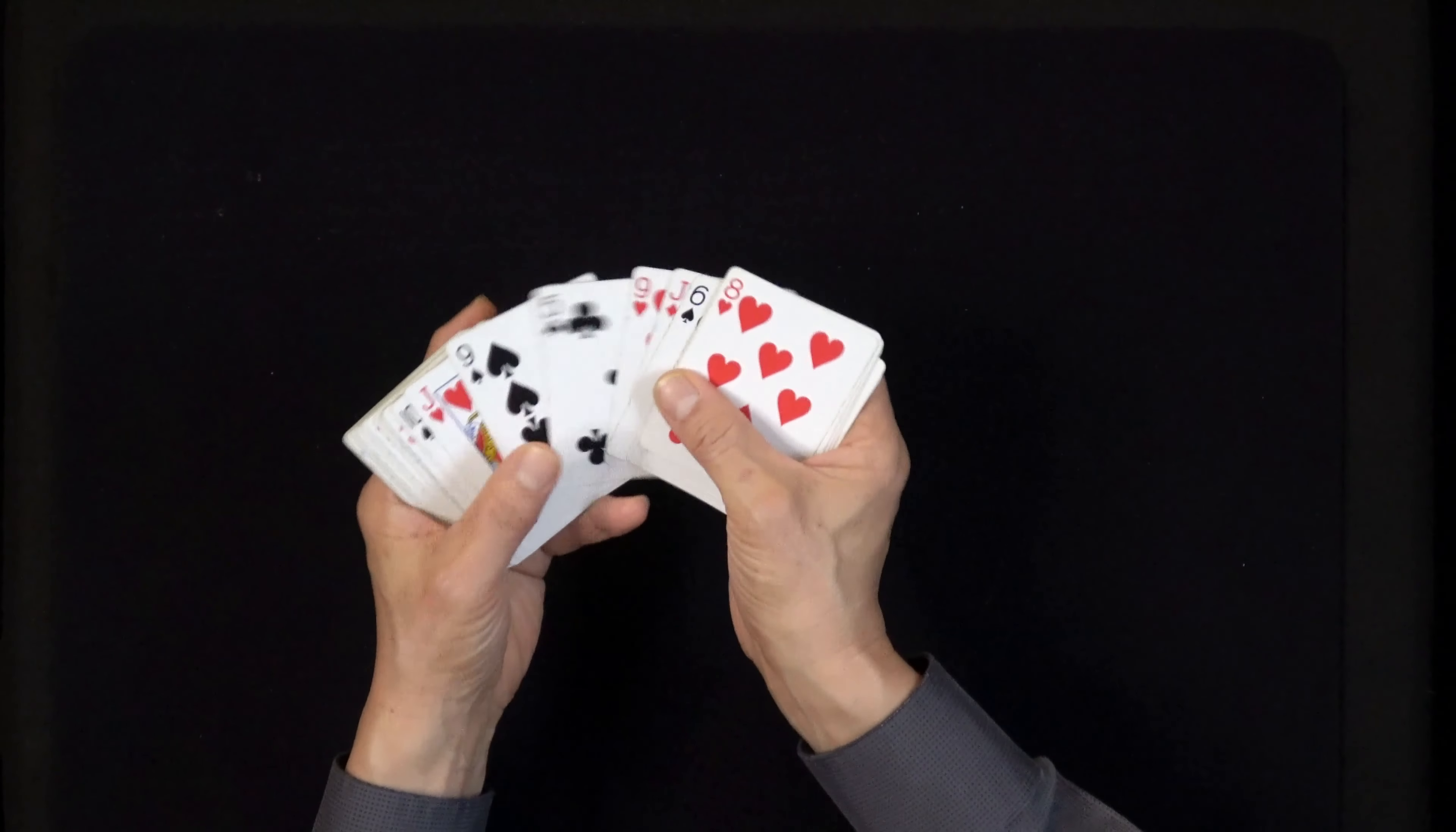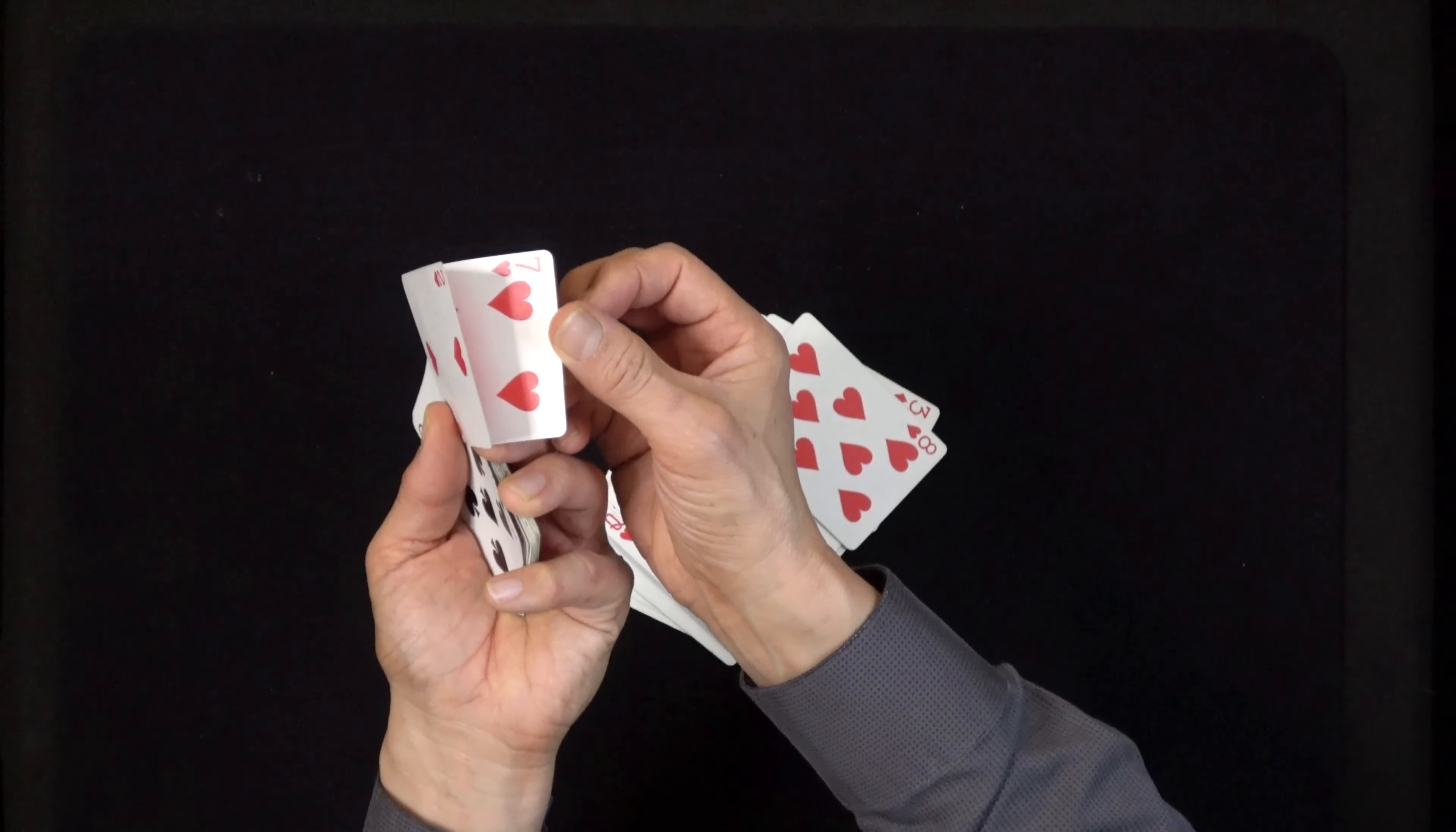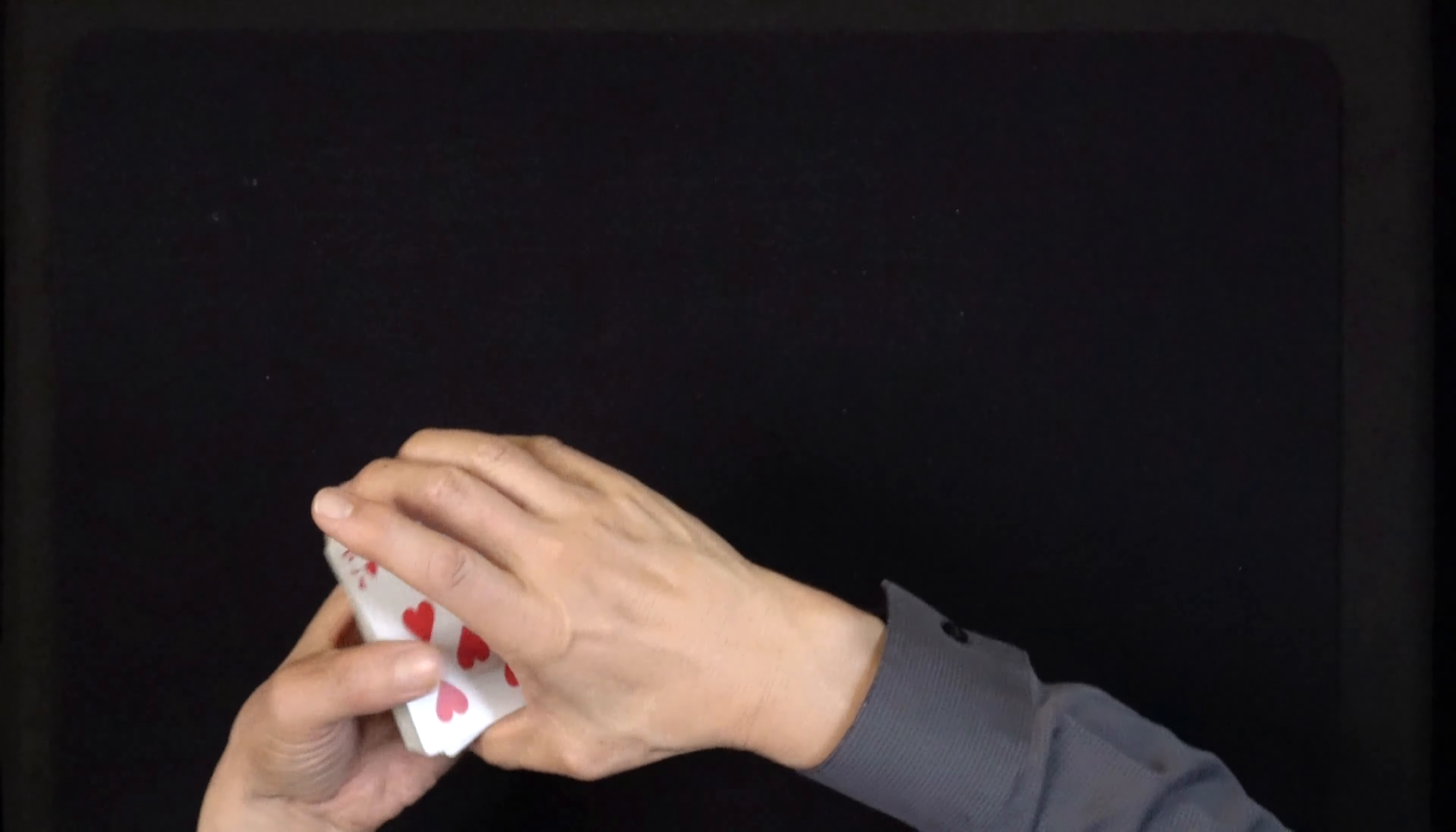But if you lay it out on the table or just simply fan the cards like this, they'll discover that the seven of hearts, or the card that you had set up, is no longer in the deck.